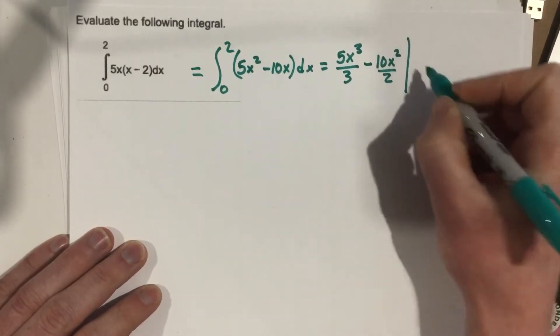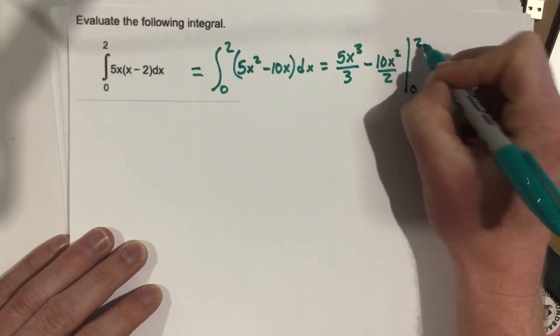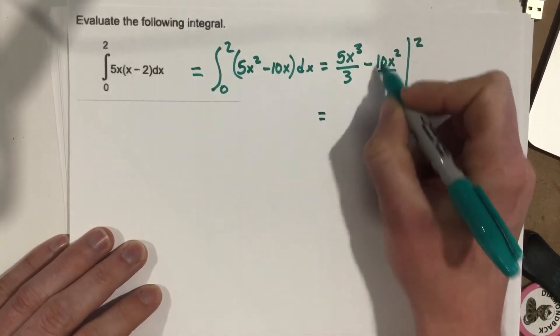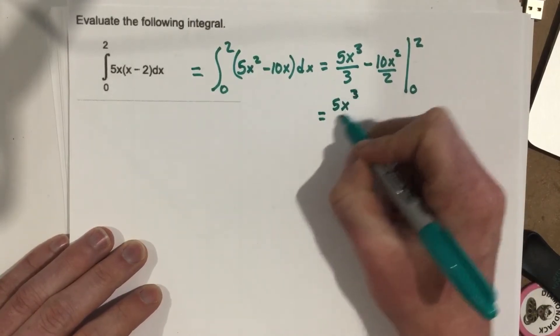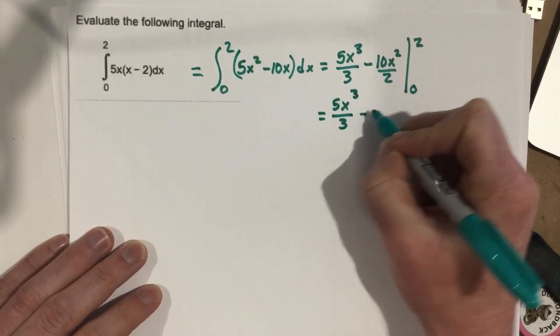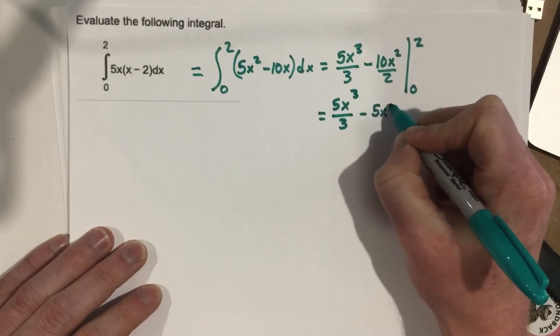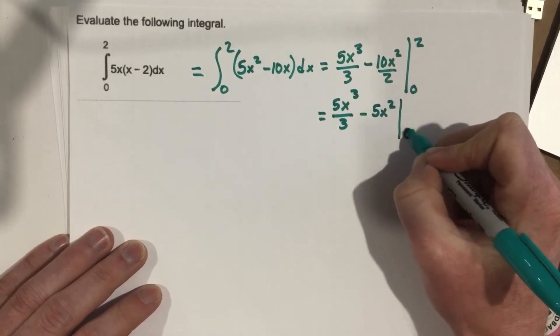And I'm going to be checking this from 0 to 2. I do a little simplifying here, so I end up with 5x cubed over 3, minus 5x squared. We're looking from 0 to 2.